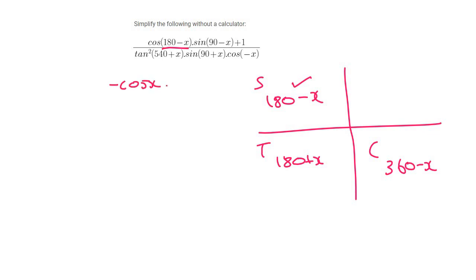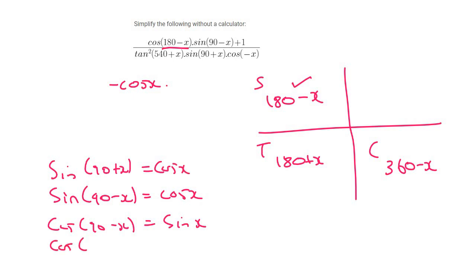Now sin 90 minus x is a co-function. Remember there's those four co-functions. And you guys need to know those. So I'll write them out for you. Write them out if you don't have them written down already and stick them on your wall and just look at them every day. That's sin 90 minus x, sin 90 plus x. And then there's a weird one. Cos 90 plus x, for some reason, decides to be the odd one out and has a negative. So sin 90 minus x is the same as cos x.